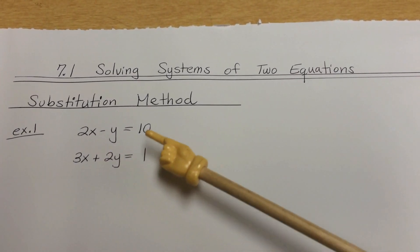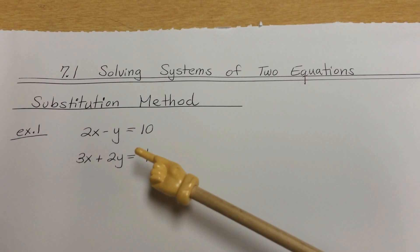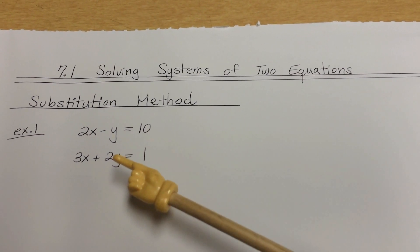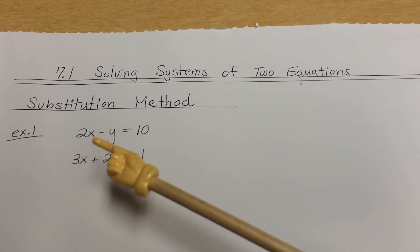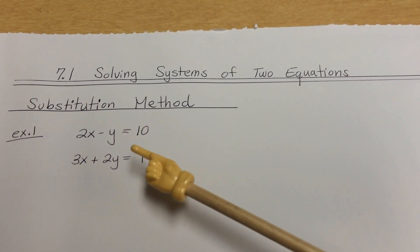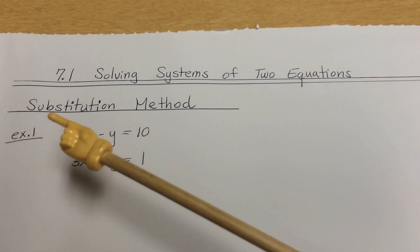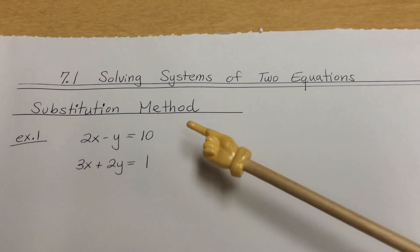But for today, what we're going to work on is just two-equation systems. With two equations, we're solving for what x and y are, using the first method, which is called the substitution method.